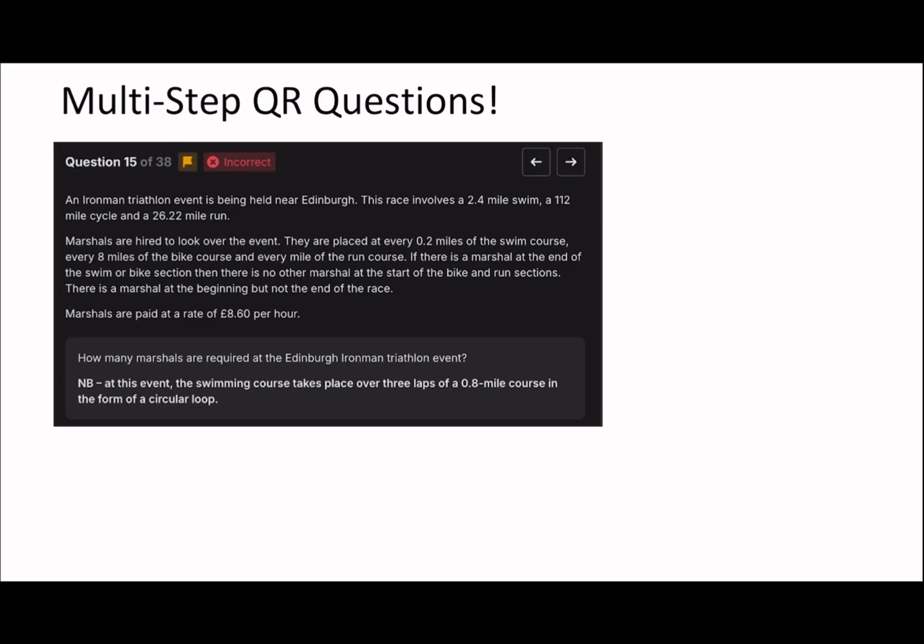This question asks how many marshals are required at the Edinburgh Ironman Triathlon event. An Ironman Triathlon event involves a 2.4 mile swim, 112 mile cycle, and 26.22 mile run. Marshals are hired to look over the event, they're placed every 0.2 miles of the swim course, 8 miles of the bike course, every mile of the run course. If there's a marshal at the end of the swim or bike, then there's no marshal at the start of the bike or run because they can kind of cover both. There's a marshal at the beginning but not the end of the race.